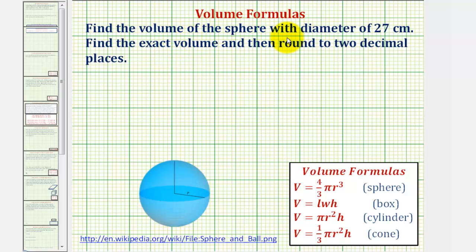We want to find the volume of the sphere with diameter of 27 centimeters. We're asked to find the exact volume, then the volume rounded to two decimal places.